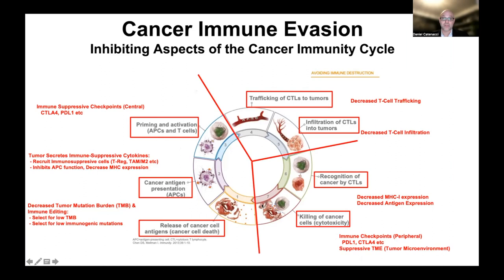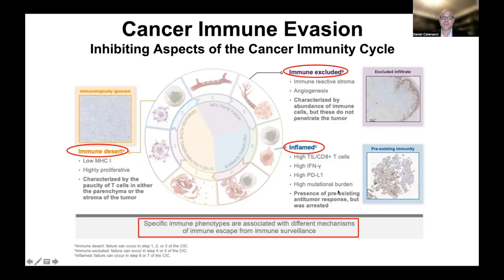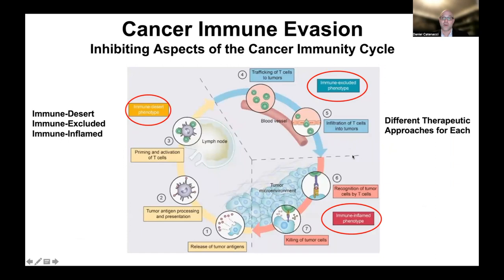We talked about three categories of the cancer immunity cycle. First, the immune desert, where T cells are not being trained — a tumor biopsy shows no immune cells infiltrating, it's literally an immune desert. Second, the immune-excluded subgroup, where T cells and immune infiltrate are nearby but not penetrating into the tumor area. Third, the immune inflamed subgroup, where there is a successful immune response getting into the tumor bed, but through upregulation of checkpoints and an immunosuppressive tumor microenvironment, those immune cells are present but arrested.